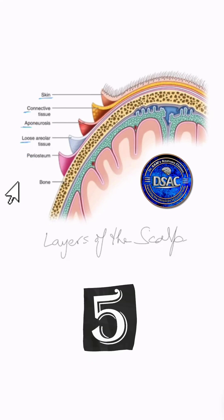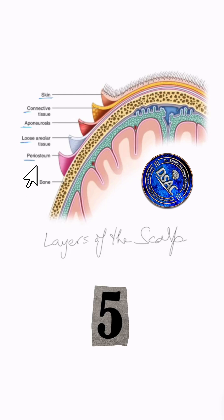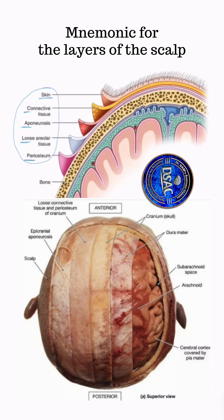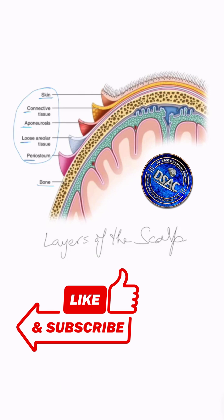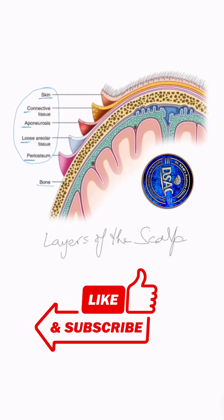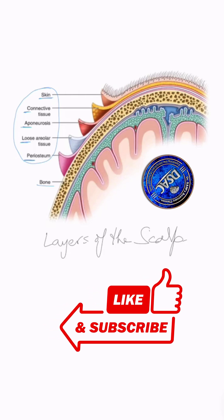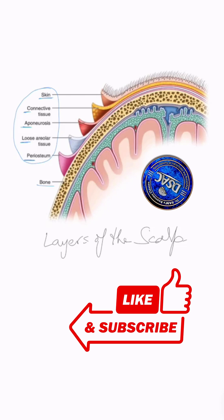Then you have L for loose areolar tissue as the fourth layer, and P for periosteum as the fifth layer — your SCALP mnemonic is complete. Below that is bone, then meninges — arachnoid, arachnoid granulations, dural venous sinuses between the two layers of the dura, then pia mater covering the cerebral cortex.